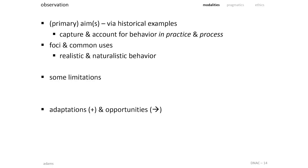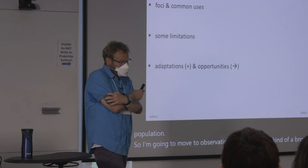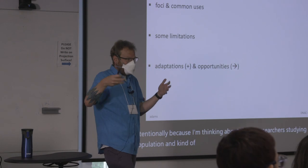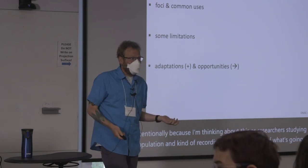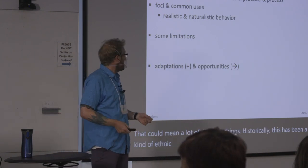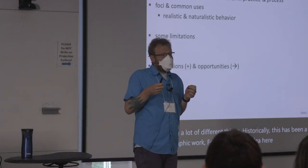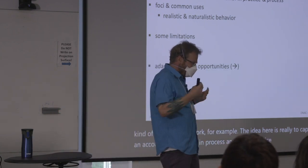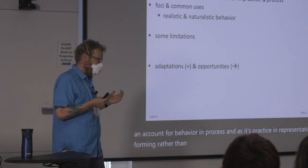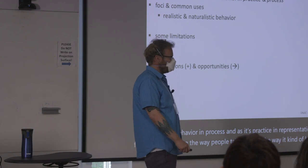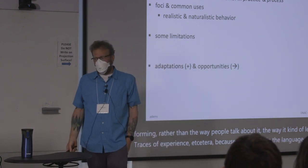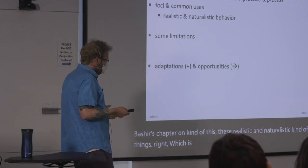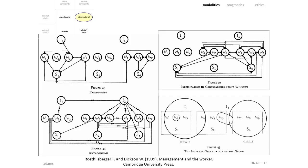Moving to observation — I use this as a broad label intentionally, thinking about researchers studying a population and recording their perceptions of what's going on. That could mean a lot of different things. Historically, this has been a lot of ethnographic work. The idea is really to capture and account for behavior in process as it's practiced in representational form, rather than the way people talk about it or the way it leaves traces of experience. It's focused on realistic and naturalistic aims.